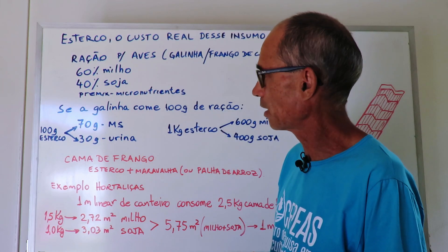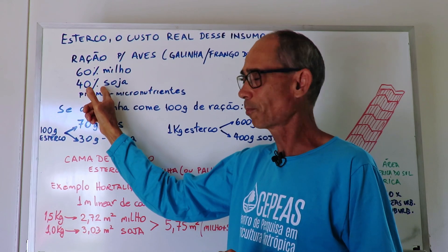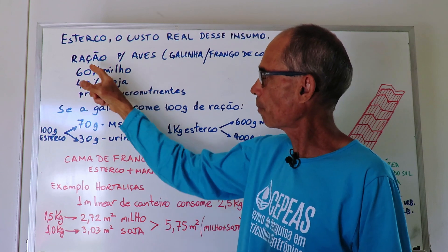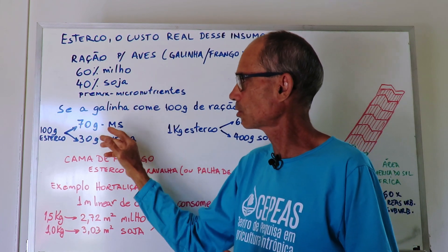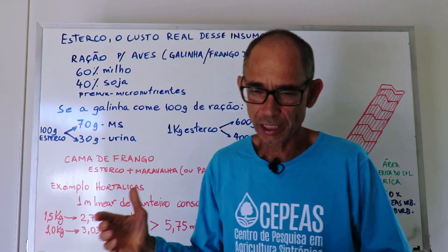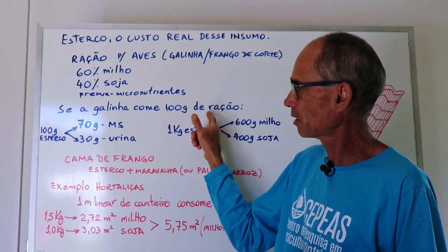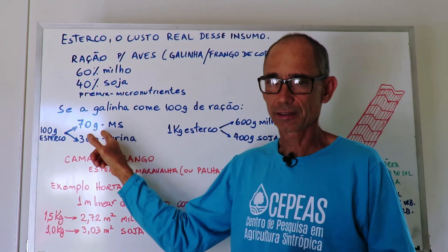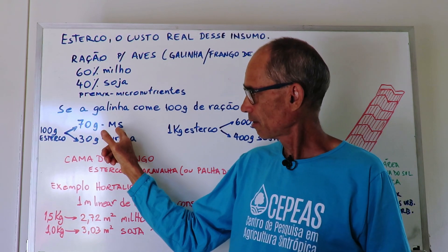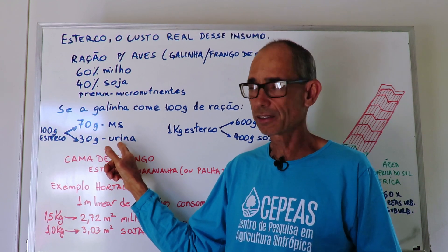If we look at the data, the food given to chickens generally consists of 60% corn, 40% soy, and micronutrients — which represent a very small volume so we will not consider them. When the animal eats 100 grams of food, 70 grams becomes the solid part of the manure, originating from the corn and soy, and 30 grams is the liquid part, which is urine.